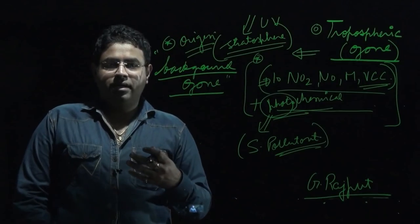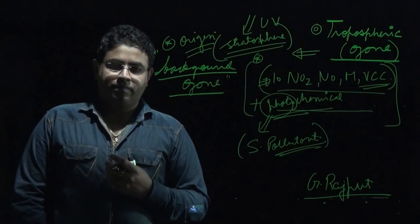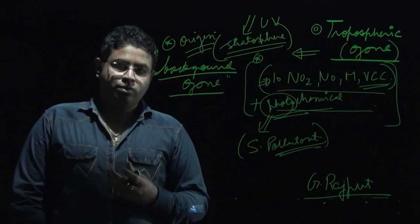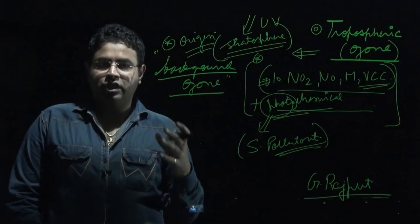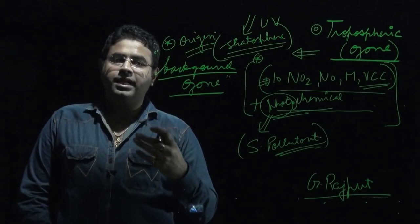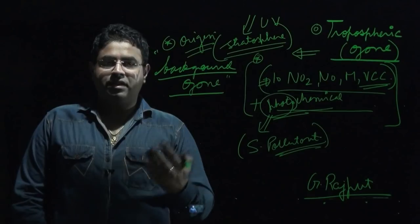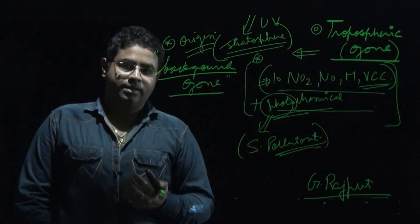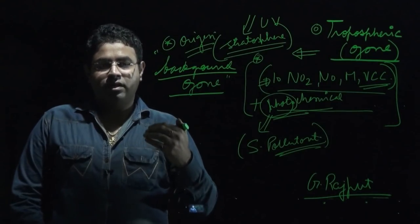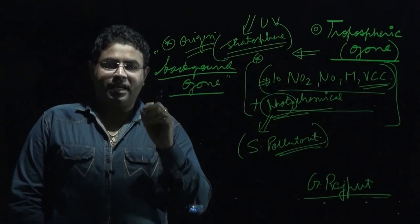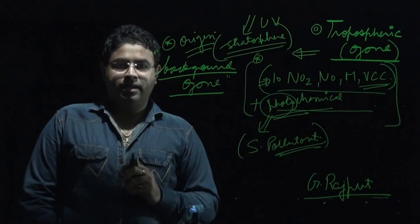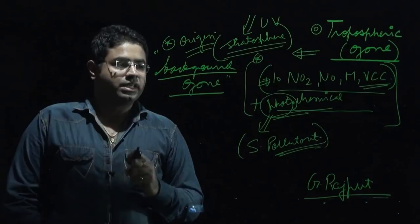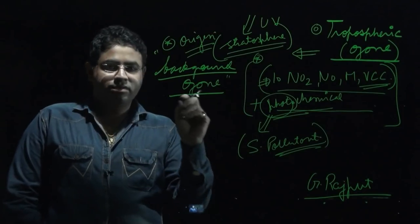India will be the most populous country by 2035 or 2040, and in order to meet the food requirements of such a huge population, India will need a lot of agricultural productivity. We need to address all factors inhibiting agricultural productivity, which is why we are analyzing the impact of this secondary pollutant on India's agriculture.